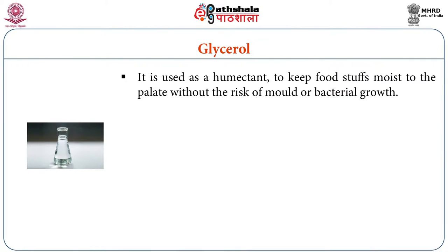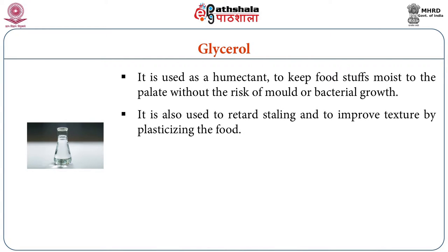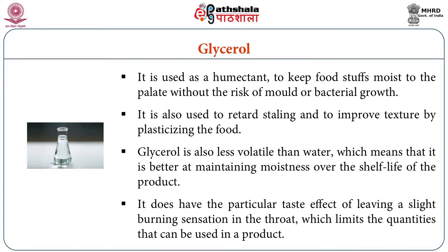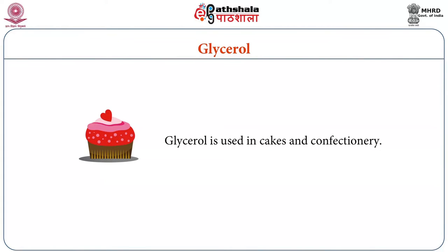The next humectant is glycerol. It is used as a humectant to keep foodstuffs moist to the palate without the risk of mold or bacterial growth. It is also used to retard staling and to improve texture by plasticizing the food. Glycerol is also less volatile than water, which means it is better at maintaining moistness over the shelf life of the product. It does have a particular taste effect of leaving a slight burning sensation in the throat, which limits the quantities that can be used. Glycerol is used mainly in cakes and confectioneries.